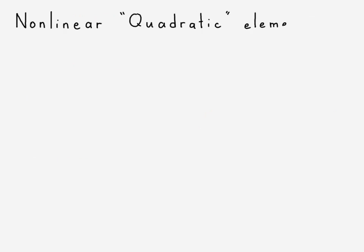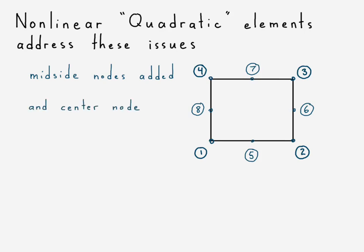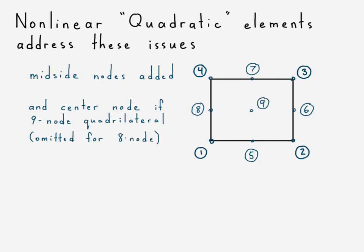The nonlinear quadratic elements address that issue by adding mid-side nodes. On occasion, there's also a center node. Since this is a lecture on the nine-node version of the quadratic quadrilateral element, we include that ninth node in the center — the eight-node version does not have it. Because of these mid-side nodes, we can have the edges curve, and that means the elements can now fit more easily around curved features, such as a fillet.